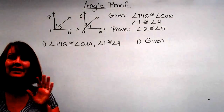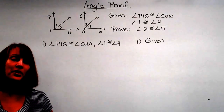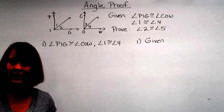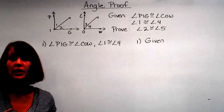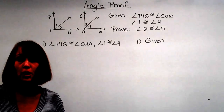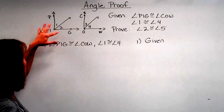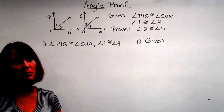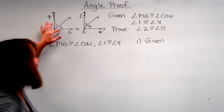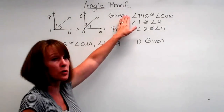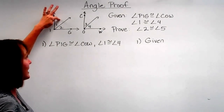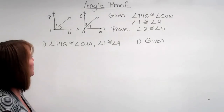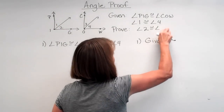We've practiced a little bit with segments — let's go into our angles. Remember, the key for all your proofs is to see what have they given and how can I use that, using your postulates, your definitions, and your properties. So here we have two angles: angle PIG and angle COW. We're given that angle PIG and angle COW are congruent, and we're also given that angle one is congruent to angle four. What we want to prove is that angle two is congruent to angle three.